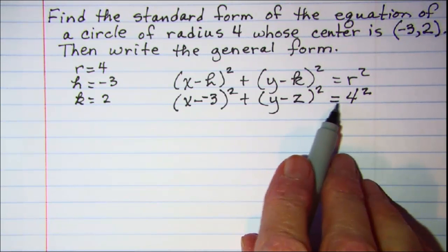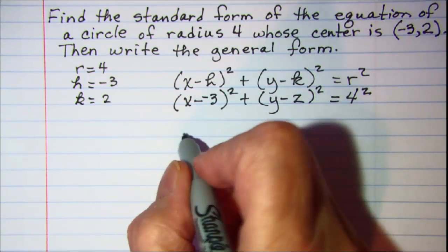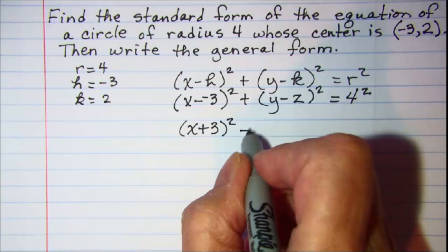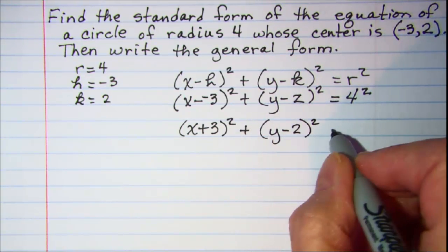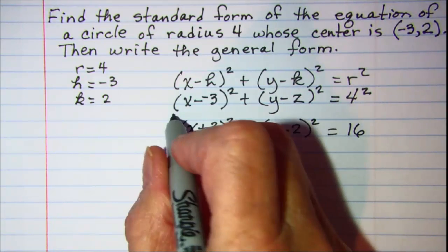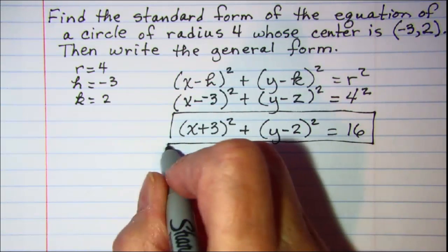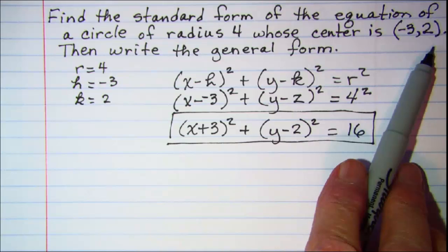Now we just need to simplify this a little bit. The two minuses here will make that plus, and then 4 squared is 16. So this is the standard form of our equation of a circle with radius of 4 and center at (-3,2).